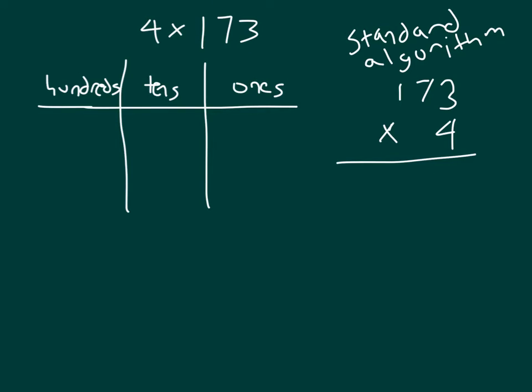Let's start by using the place value chart. We have 173, so that would be three ones to begin with. Let's model that number. Seven tens and 100. And we're multiplying by 4. So with the standard algorithm, we'll go 4 times that 3, which is 12, where we place the 2 and we regroup the 1 into the tens place.